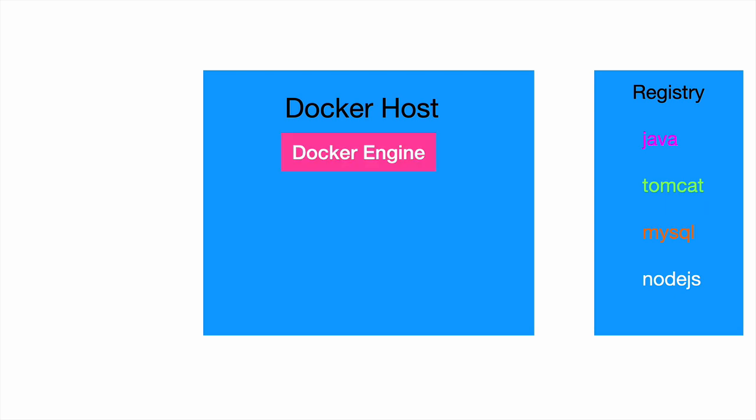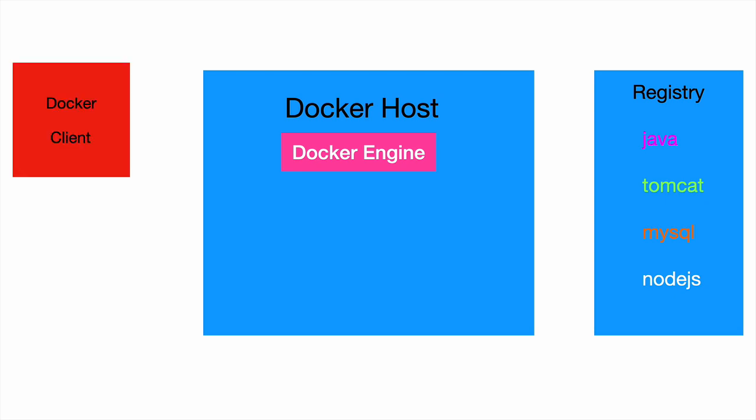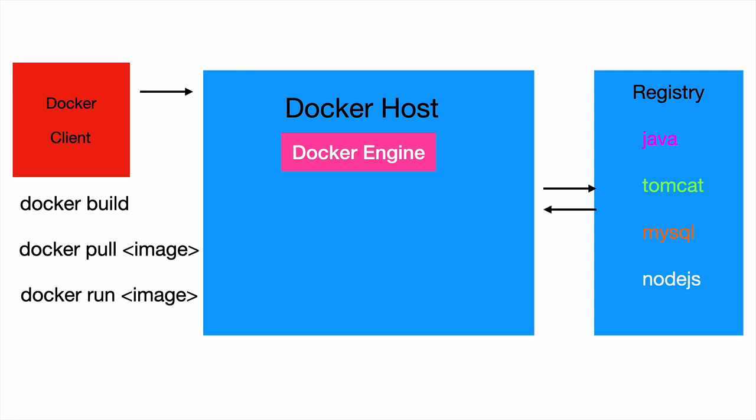Once you have the Docker host, you have the Docker engine. Docker client is a command line utility using which we can execute commands against the Docker engine. For example, if you say docker build, it will build a particular image on your machine. Before you run or launch a container from the image, you will have to build that image. You can also pull images from the centralized registry. The registry already has a lot of images, and instead of using your own image, you can pull existing images and start using them.